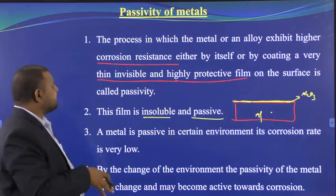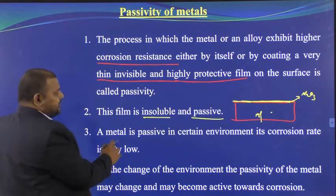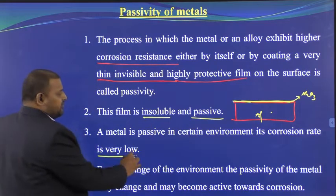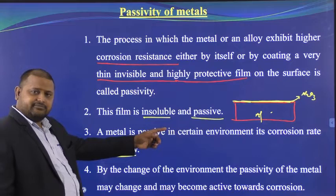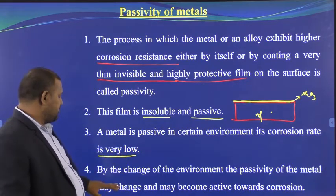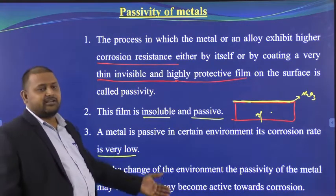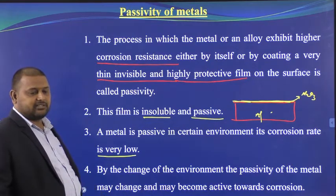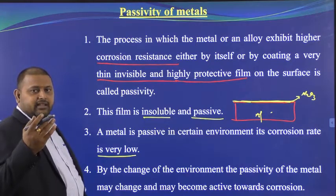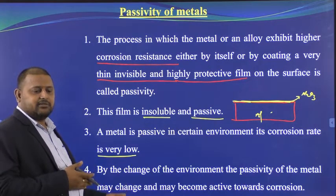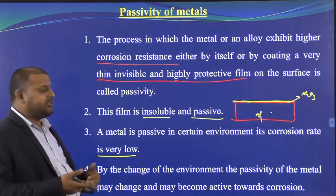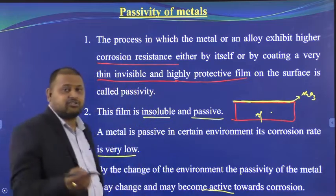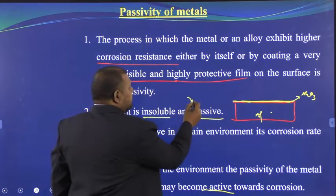This character is called passivity. A metal is passive in a certain environment and its corrosion rate is very, very low. If you change the environment, automatically the passivity also changes and the metal may become active towards corrosion. Active means corrosion takes place; passive means no corrosion.